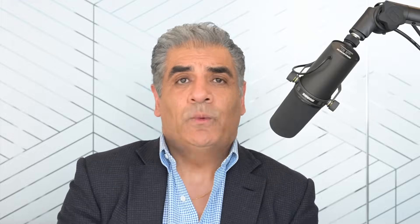The best way to avoid these complications is to know that you've got the problem and to know when to treat it before a complication arises. We treat this by replacing the aortic root or ascending aorta with a man-made tube, or a tube derived from animals, or sometimes from humans who've donated their aorta after death — we call this a homograft. The important thing is to know about the problem, monitor it, and know exactly when to treat it.